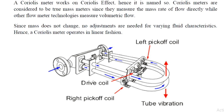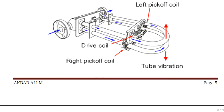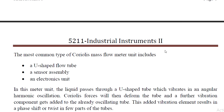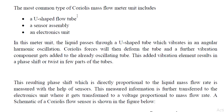Looking at how we measure the flow — there is fluid flow in one pipe, and there are also two-pipe configurations. The most common type of Coriolis mass flow meter unit includes a U-shaped flow tube as its main component.